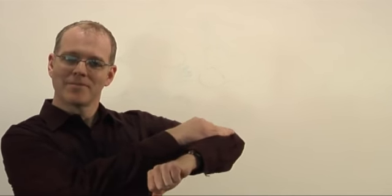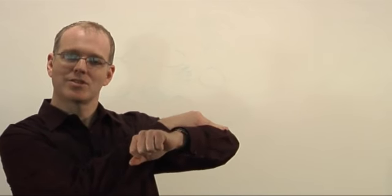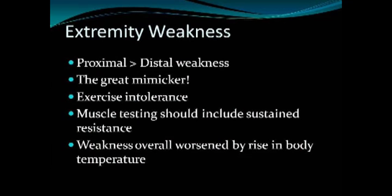Myasthenia is sometimes called the great mimicker because it can present in so many different ways — for example, one patient presented just with weakness playing the piano. Weakness in the extremities is usually more proximal muscles and is brought out by fatigue. When examining a patient with extremity weakness in myasthenia, give sustained pressure and see if it gets easier to overcome the muscle over time — that would suggest myasthenia because of the fatiguing component.